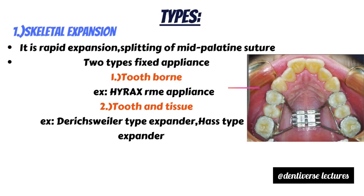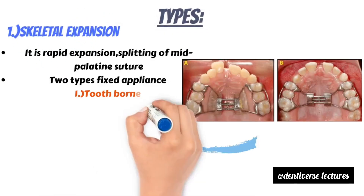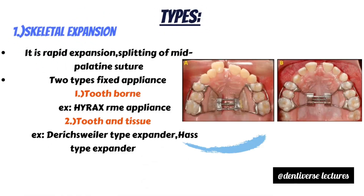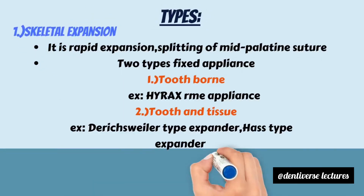Skeletal expansion is rapid expansion by splitting the mid-palatine suture. There are two types of fixed appliances: tooth-borne, the most commonly used example being the Hyrax appliance, and both tooth- and tissue-borne, examples being the Derichsweiler and Haas type expander.